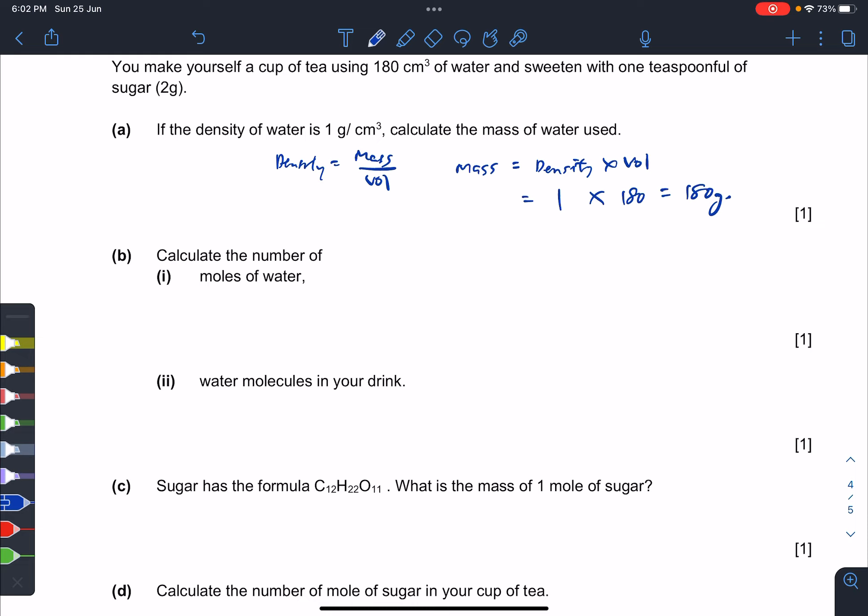Calculate the mole of water. Quite straightforward: mole of H2O is mass over Mr, which is 180 divided by (2×1 + 16), equals 10 moles. Then they ask you for molecules.